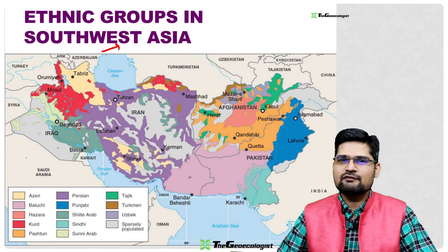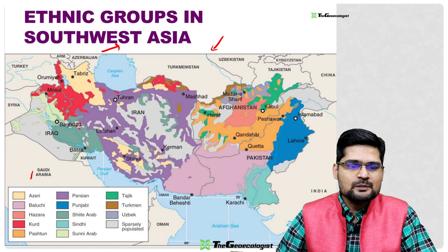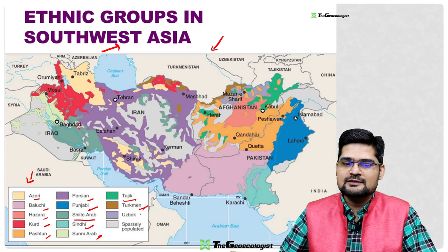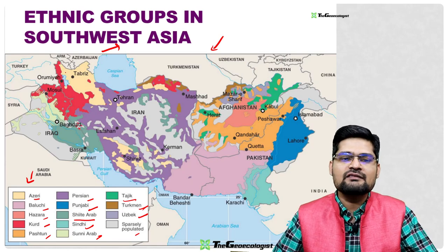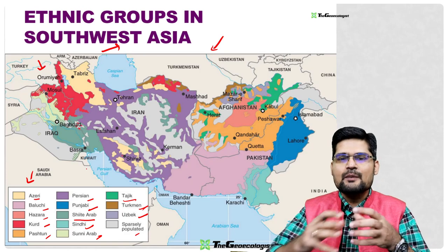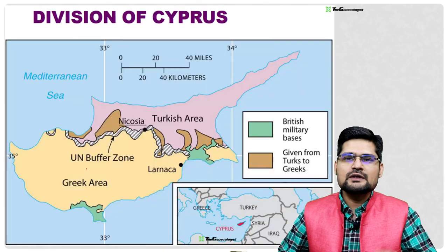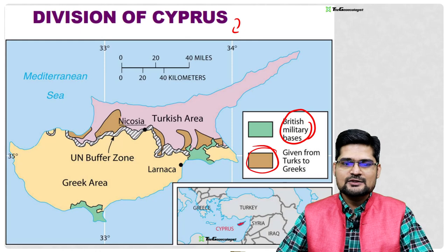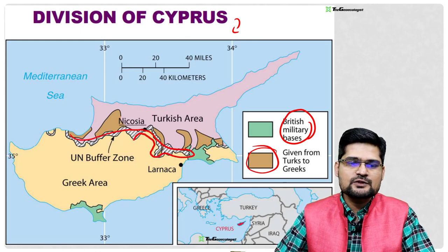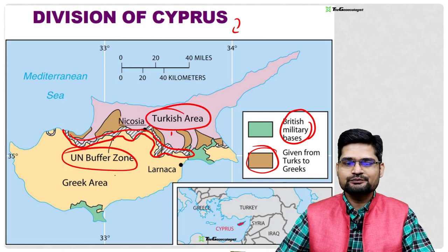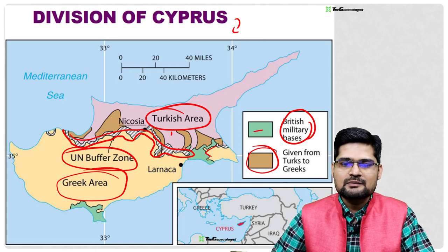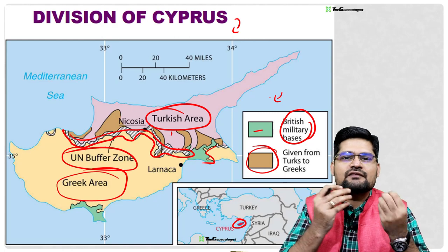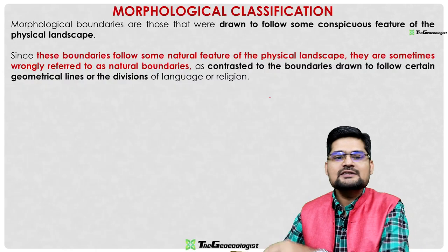In Southwest and Central Asia, many ethnic groups — Azeri, Baluchi, Hazara, Kurd, Pashtun, Persian, Punjabi, Shiite Arab, Sindhi, Sunni Arab, Tajik, Turkmen, Uzbek — each have different territorial distributions, representing subsequent-type boundaries. Cyprus is a notable example showing treaty-based division: British military bases, a UN-controlled buffer zone, Turkish-controlled north, and Greek-controlled south, all in the Mediterranean Sea.